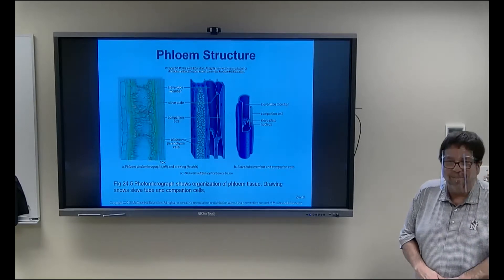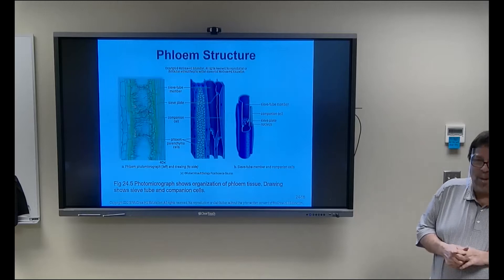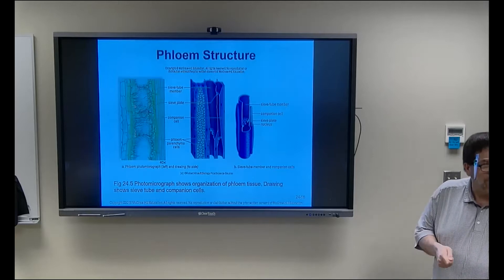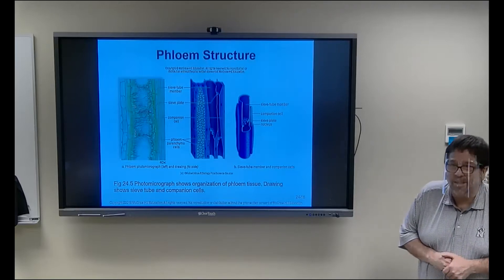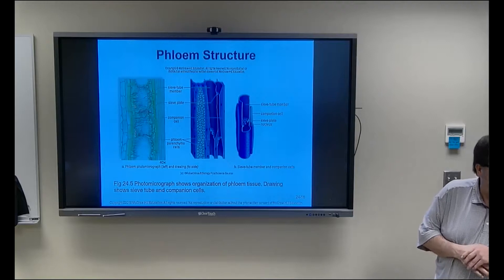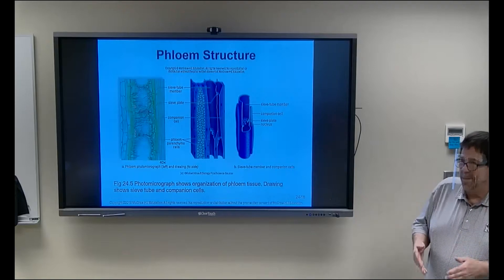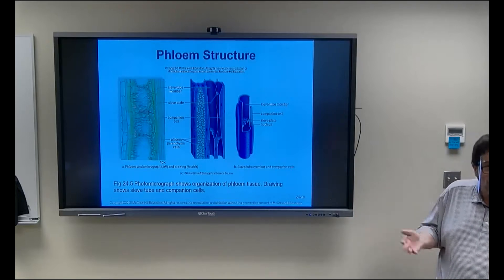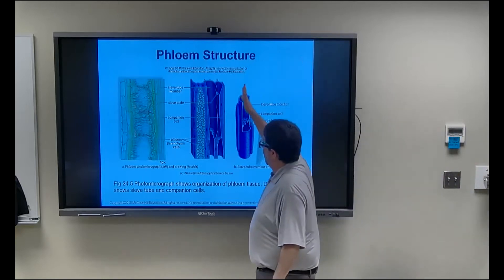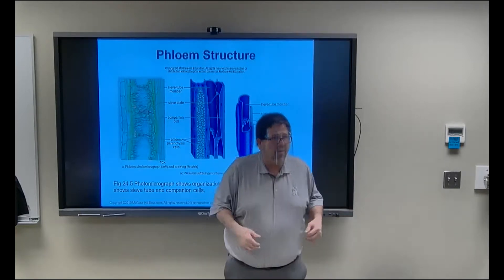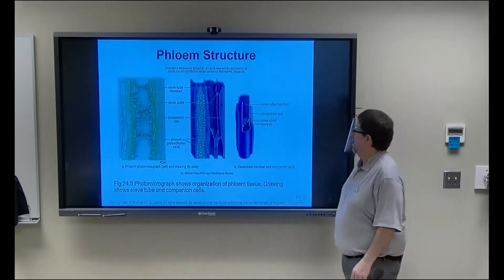Maple syrup is phloem flowing out of a maple tree — that's what we put on pancakes. Pine resin that drops on your car in summer is phloem out of a pine tree — don't put that on your pancakes. Sugar cane and brown sugar are also from phloem. Phloem carries the products of photosynthesis down the plant, and the food ends up in the roots where it's stored — potatoes are an example of that stored food.